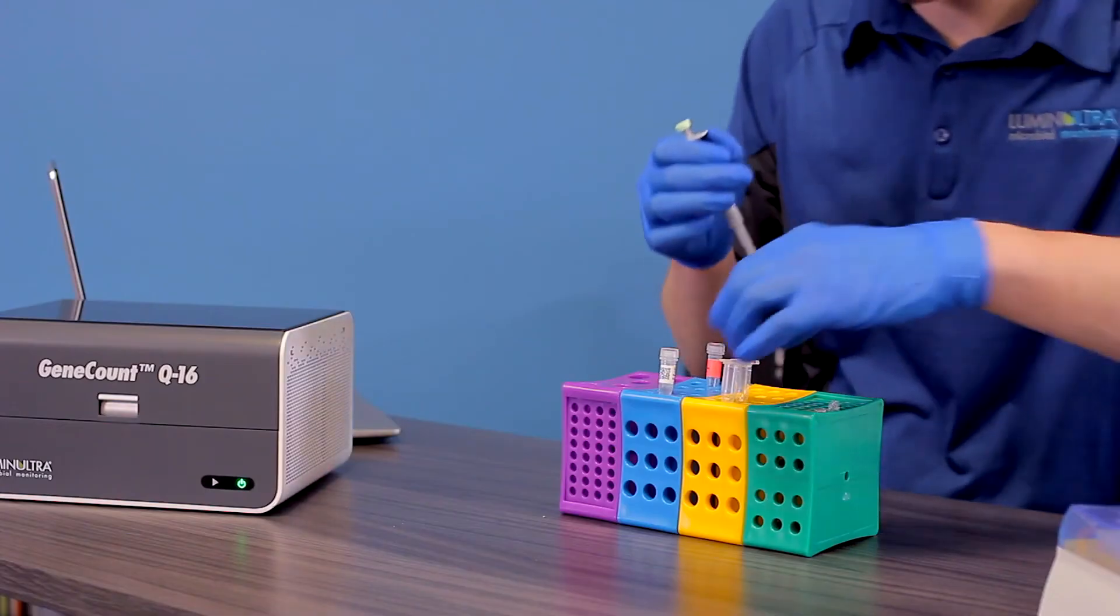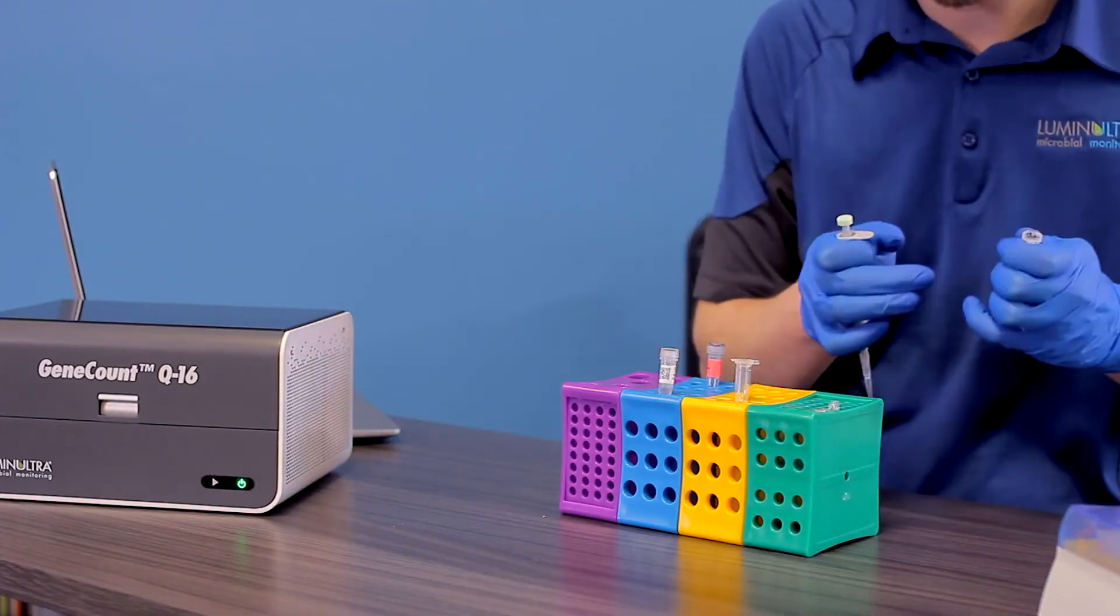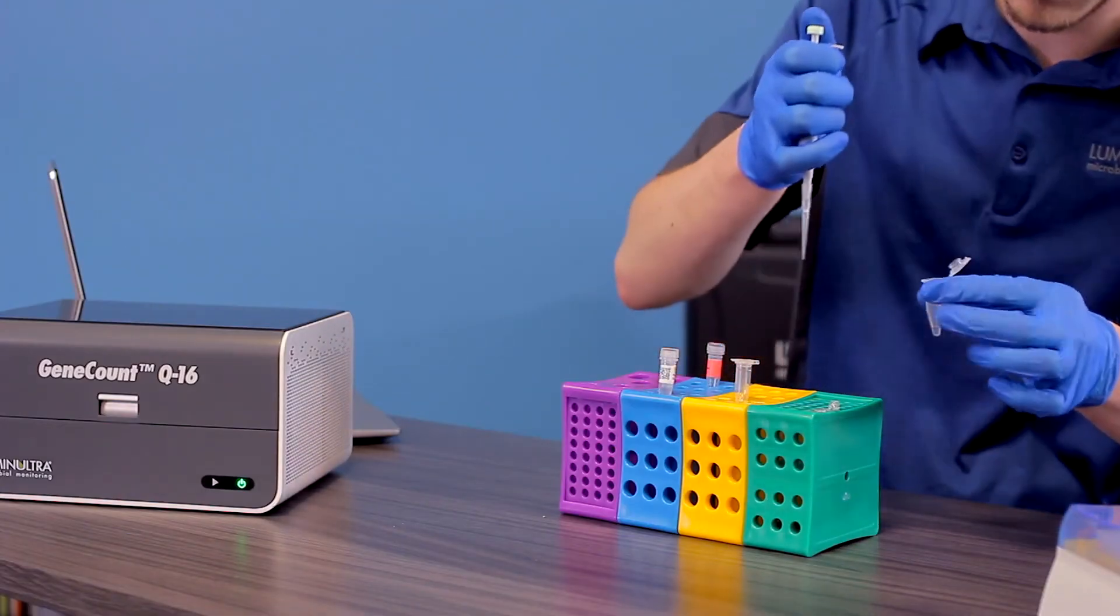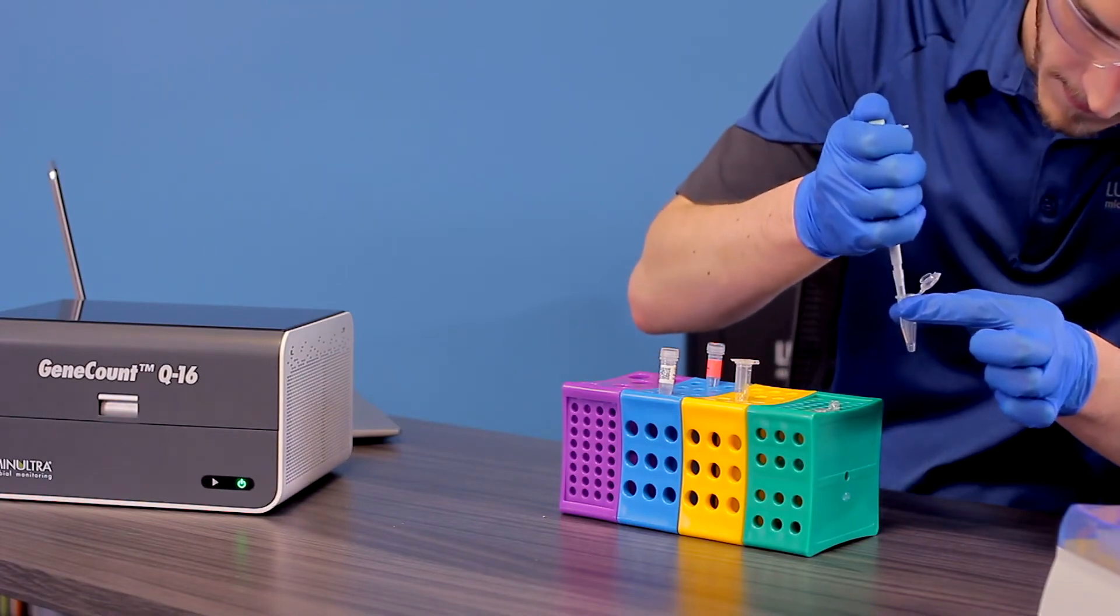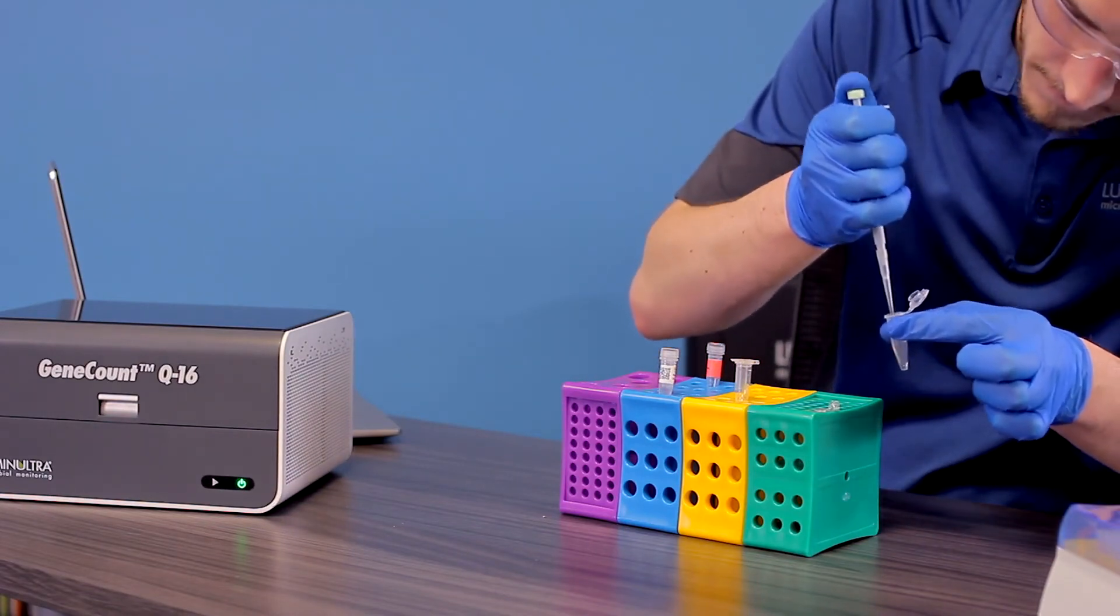With a new pipette tip, transfer 20 microliters of the first DNA sample into the second qPCR reagent tube. Recap both tubes and label your sample number 1.